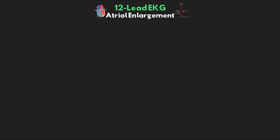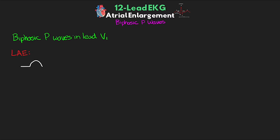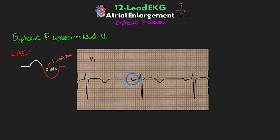Another way to distinguish atrial enlargement is with biphasic P-waves in lead V1. These biphasic waves indicate a non-specific conduction problem in the atria, usually caused by atrial enlargement that may not be severe enough to produce classic P-mitral or P-pulmonale patterns. If we see a biphasic P-wave in V1, we determine whether the first or second part is the larger dominant part. In left atrial enlargement, the second part of the P-wave is the larger part, and this part must also be at least 0.04 seconds or one small box wide. In this example, the P-wave in V1 is biphasic with the largest part being the terminal second portion greater than 0.04 seconds, confirming left atrial enlargement.